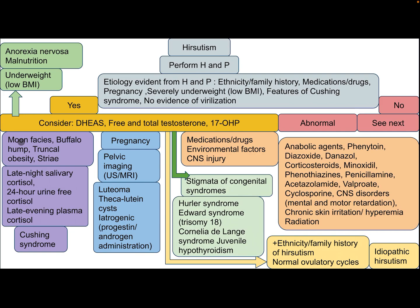If there are features of moon facies, buffalo hump, truncal obesity, and striae, the patient needs late-night salivary cortisol, 24-hour urine free cortisol, and late evening plasma cortisol — this is consistent with Cushing syndrome. If there is pregnancy, pelvic imaging (ultrasound or MRI) is needed; differential diagnosis includes luteoma, theca lutein cyst, and iatrogenic causes such as progestins or androgen administration.